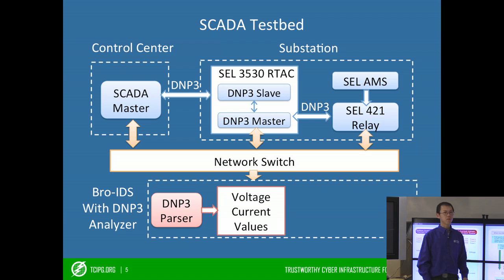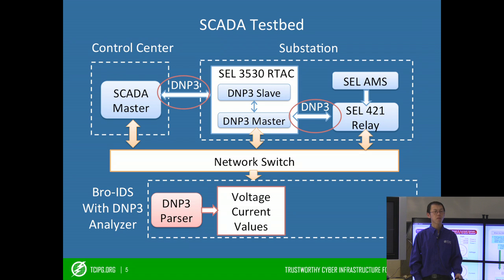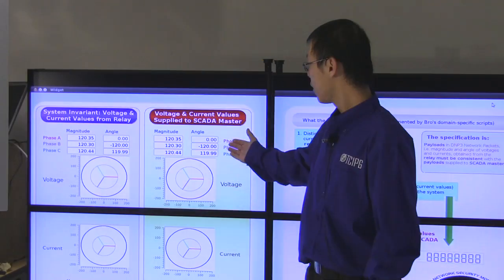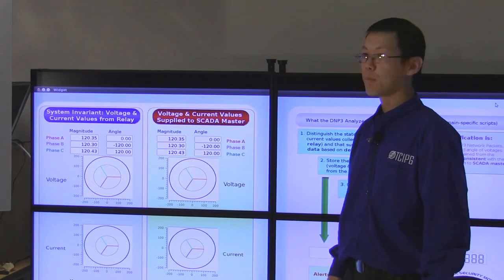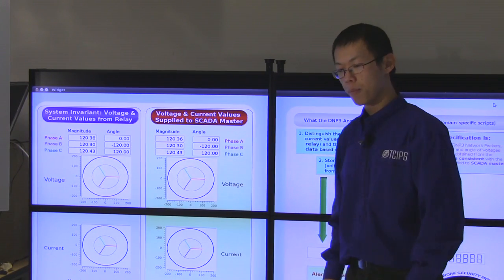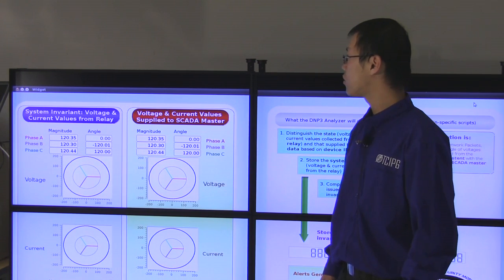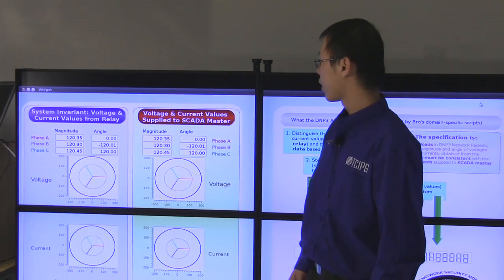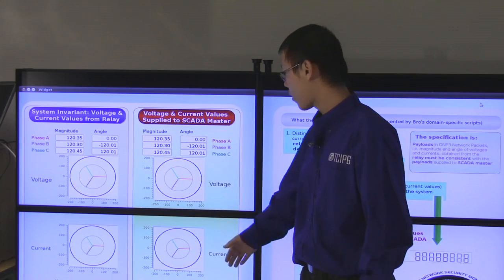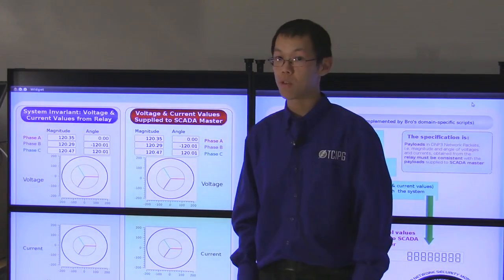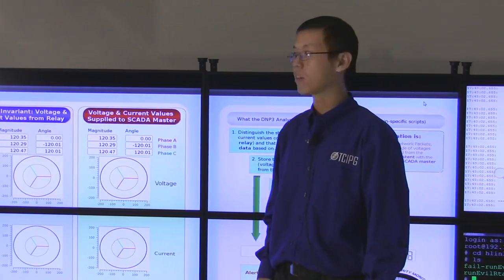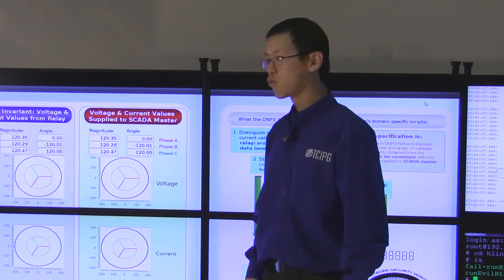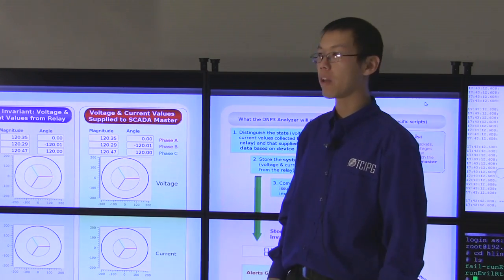The DNP3 parser, a component of the DNP3 analyzer, extracts the voltage and current values from the DNP3 packets on both communications, independent of the security policy we want to use, as shown on this screen. On the left side are the voltage and current values collected from the relay, and on the right side are the voltage and current values provided by the SCADA master. We use the left side values as the system invariant. Voltage is on the upper side and current on the lower side; both contain three phases, and the magnitude and angle of each phase are displayed in those text boxes. We draw vectors to represent each phase according to its magnitude and angle.